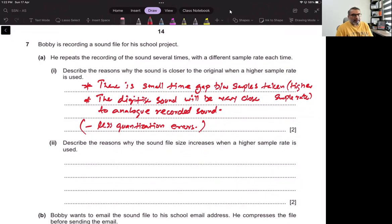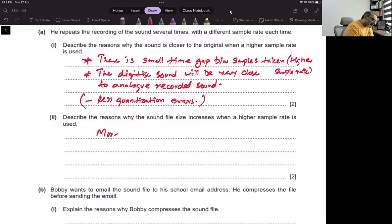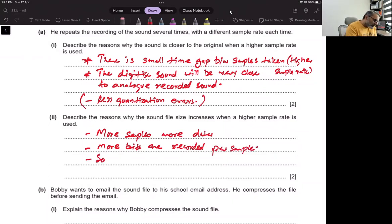Describe the reasons why the sound file size increases when a higher sample rate is used. When we have more samples, we have more data. More bits are recorded per sample. So file size increased by additional samples multiplied by sample size bit rate.